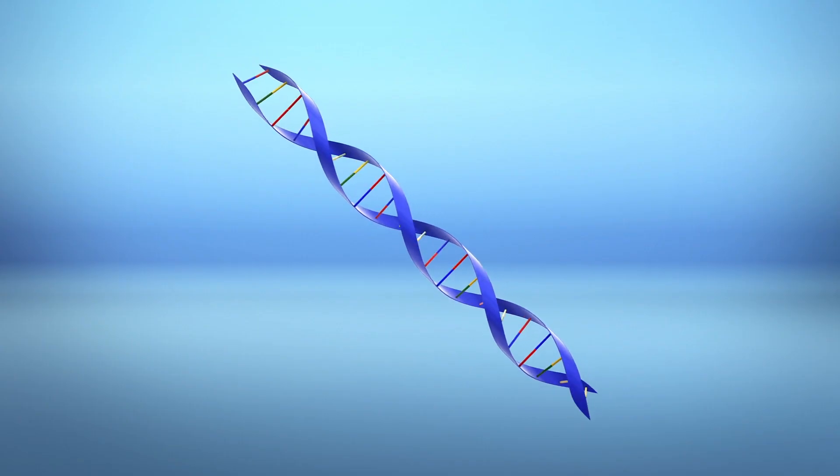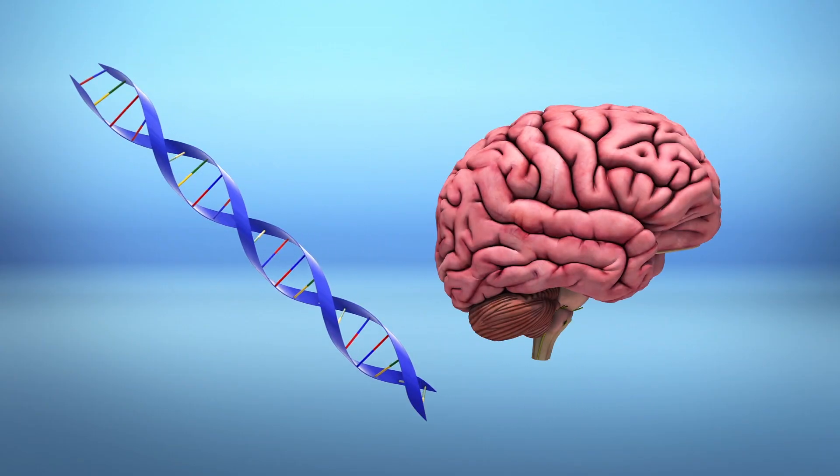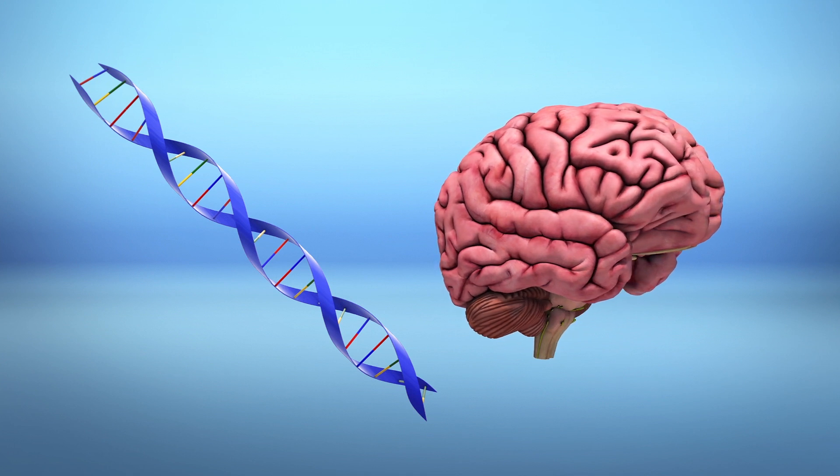New research from UCLA has shown that removing the gene CCR5 could potentially be linked to enhancing one's ability to learn and form memories.